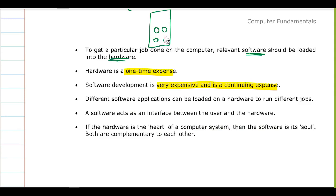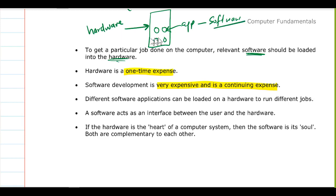This is the same idea as with your phone — this app is software, and this physical gadget is hardware. One cannot work without the other. Hardware is a one-time expense — you normally buy your phone once. But you keep looking for new software, and software development is very expensive and a continuous expense. Some software you subscribe to so you can keep using it.